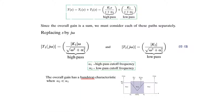The overall combination of the high pass and low pass gains will have band stop characteristics, as shown in this figure, provided α2 is less than α1. You can see that α2 < α1 and there is a stop band in between — that is why this will be called a band stop response.